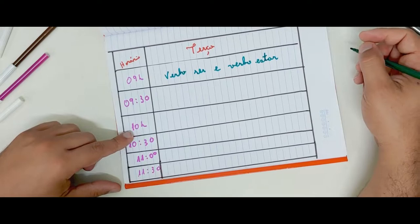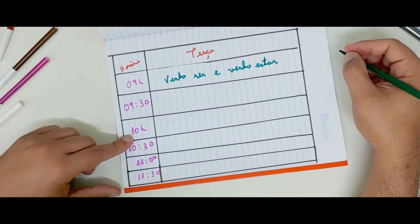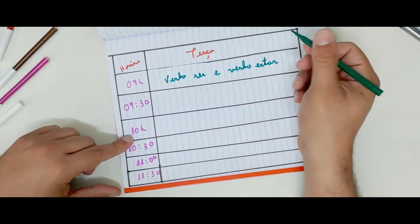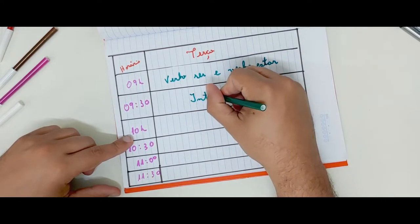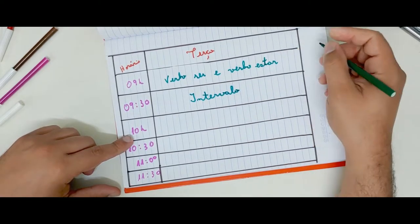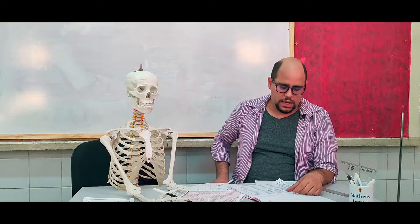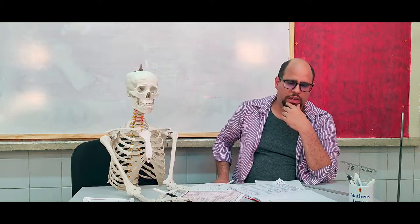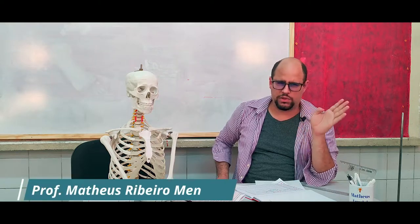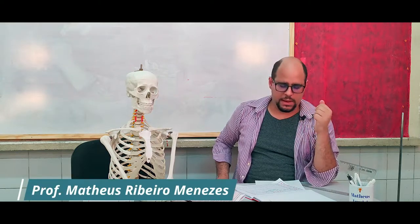When it gets to about 9:30, I'll stop, right? To slow down a bit. So I'm going to put interval here. I put half an hour, right? But you can make 10-minute intervals. It doesn't have to be half an hour. Let's suppose 10 o'clock. At 10 o'clock I need to review another subject. So I'm going to put one subject per hour to also not confuse my head.